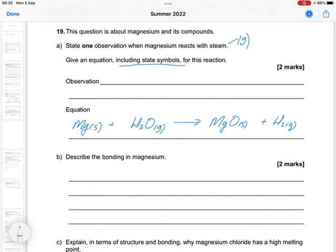And of course this is a solid as well. So it does say to include state symbols. If you're in the habit of that anyway, obviously you need to put them on. Observation: bright white light.